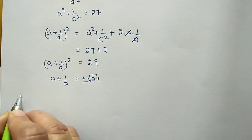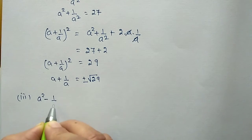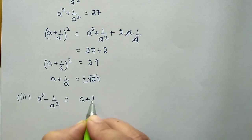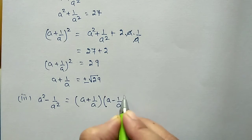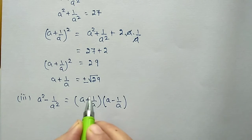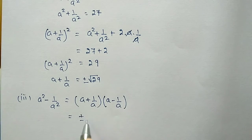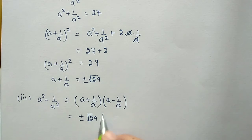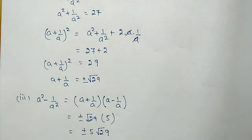For the third part, a² − 1/a² = (a + 1/a)(a − 1/a). We have calculated a + 1/a = ±√29 and a − 1/a = 5. So the answer is ±5√29.